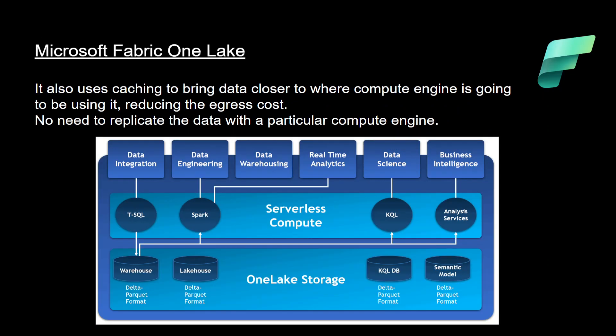OneLake also uses caching to bring data closer to wherever the compute engine is going to use it. For example, if you have an Amazon S3 bucket with a pointer to it, when you are egressing data from S3 there is an egress cost involved — as covered in the Microsoft Fabric pricing video. The caching mechanism brings the data closer to, say, a Spark compute engine, helping reduce egress costs. You do not need to replicate the data into your own environment before using it.